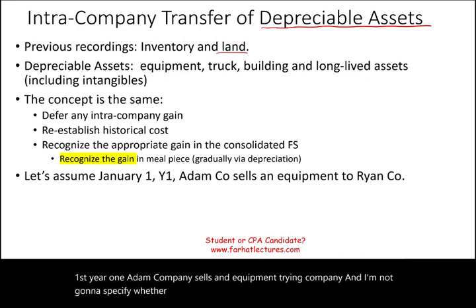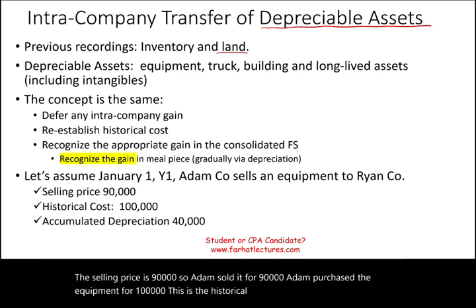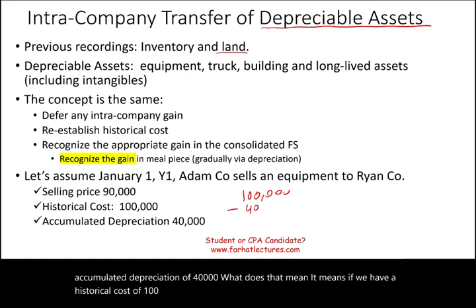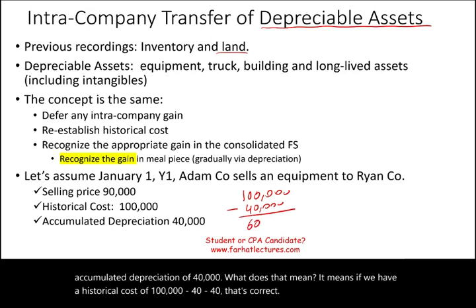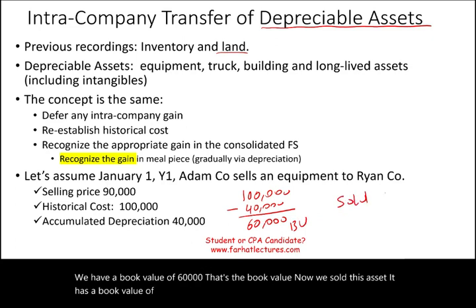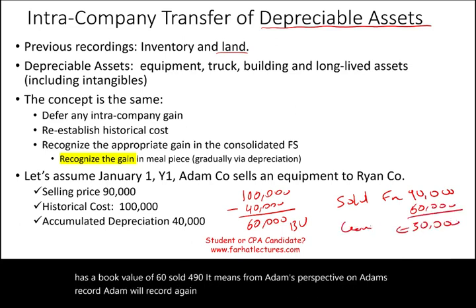I'm not going to specify whether Adam is the parent or Ryan is the subsidiary — I'll tell you the difference at the end. The selling price is $90,000. Adam purchased the equipment for $100,000, which is the historical cost, and it has accumulated depreciation of $40,000 — giving a book value of $60,000. Sold for $90,000, Adam records a gain of $30,000. This is an intercompany gain.